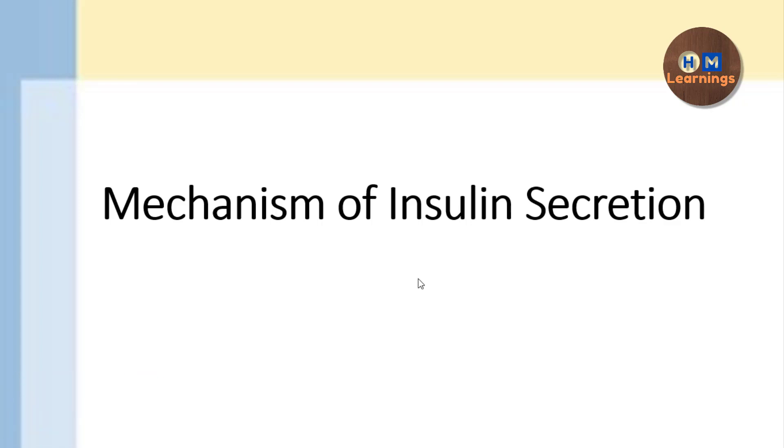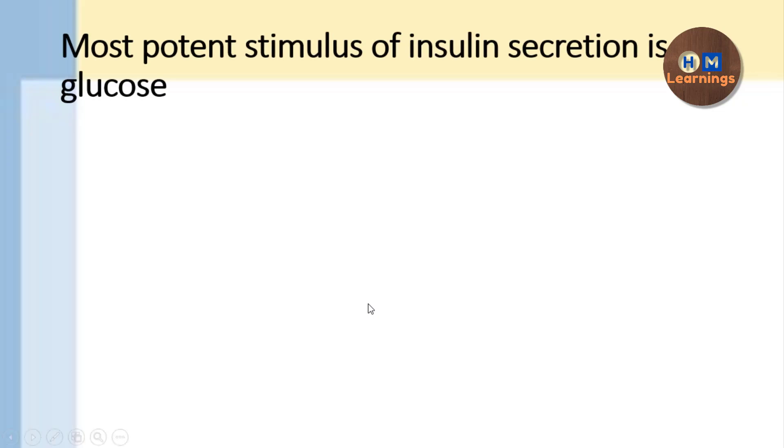So this is a very short video about how insulin is secreted from the pancreatic cells or the beta cells of the pancreas. And what is the stimulus of that? The most potent stimulus of insulin secretion is basically glucose. Now I'm telling you the steps that how it is going to stimulate or cause the release of insulin.